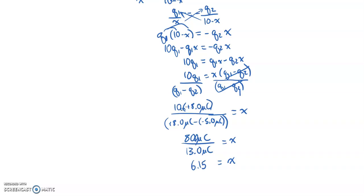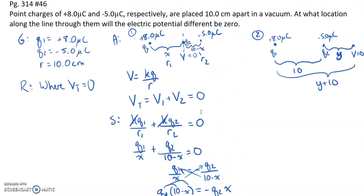The units are centimeters in the numerator, giving x equals 6.15 centimeters. Going back to the diagram, the distance from q1 to the zero-potential point is 6.15 centimeters, and the remaining distance from that point to q2 is 10 minus 6.15, which is 3.85 centimeters. That's the first scenario solved.